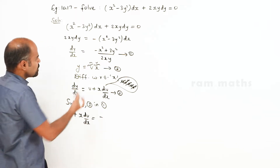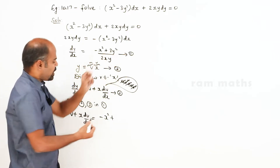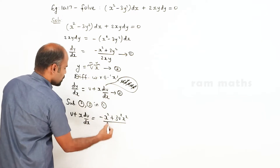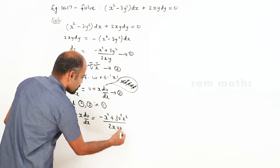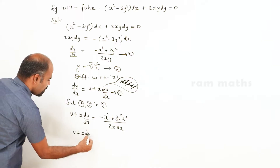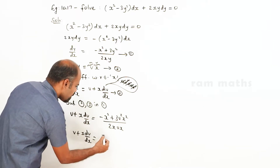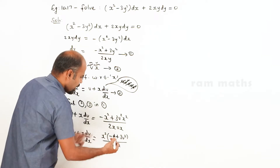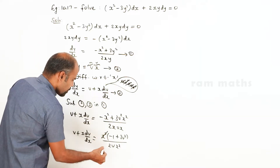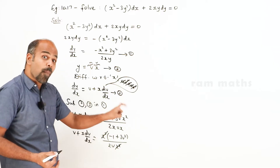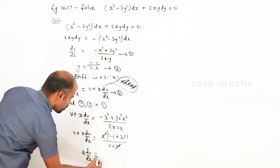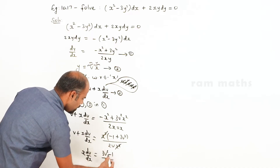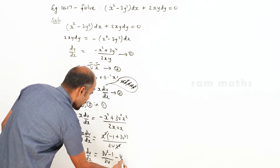Replacing y with vx: minus x² plus (vx)² whole square gives v² x², and 2x times vx gives 2vx². So we get v plus x dv/dx equal to minus x² plus 3v²x² all by 2vx². The x² terms cancel, giving minus 1 plus 3v² by 2v, minus v.